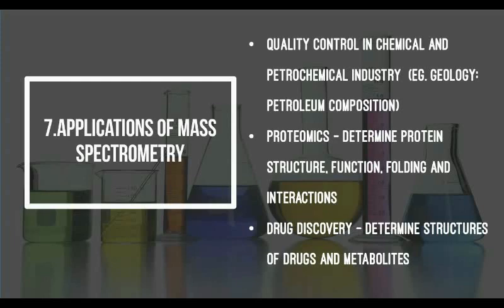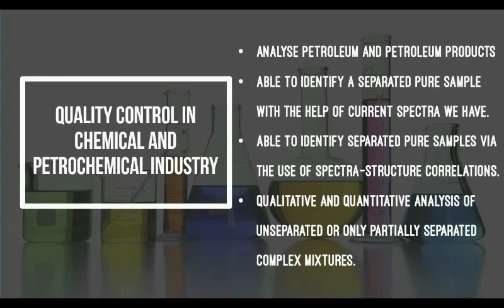These are various examples of how mass spectrometry is used in industries. We will be focusing on mass spectrometry in petrochemical industries, proteomics, and in drug discovery. Mass spectrometry plays an important role in quality control in chemical and petrochemical industries. As most petroleum samples contain complicated compounds containing hundreds or even up to thousands of individual hydrocarbons, separating these molecules are relatively difficult. Using this method, we are able to analyze the petroleum and their products. Also, we are able to identify the separated compounds with the use of current spectra we have or via the help of our knowledge of the current chemical or physical properties of the molecules. To add on, qualitative and quantitative analysis of unseparated or partially separated complex mixtures can be made.